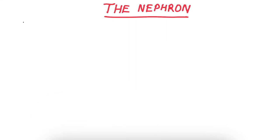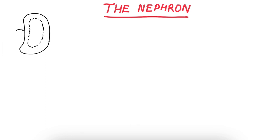Good day dear students, today we are going to talk about the nephron. The nephron is the structural and functional unit of the kidney, which is the organ for homeostasis. The kidney is a bean-shaped organ divided into two regions: an outer cortex and an inner medulla. The right kidney measures 11 by 6 by 3 centimeters, weighs 150 grams, and is about the size of a clenched fist.